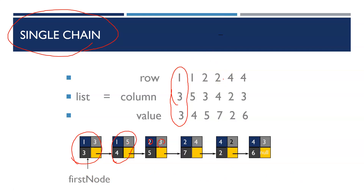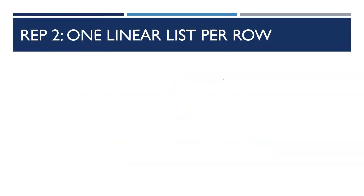So, sparse matrix — first representation: triples. The triples array list, single chain. Now the second method: representation 2 is one linear list per row.